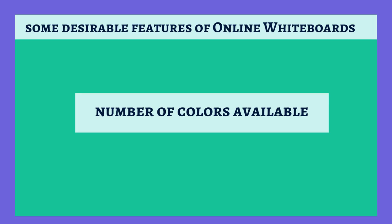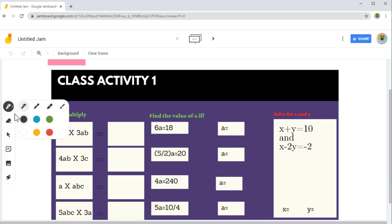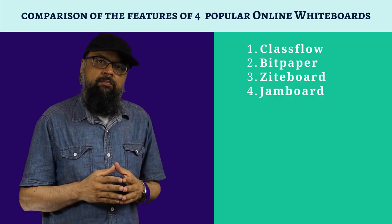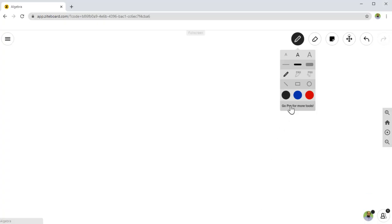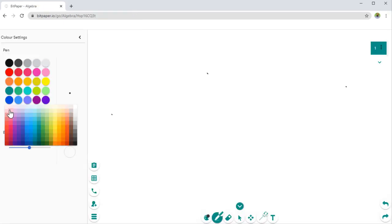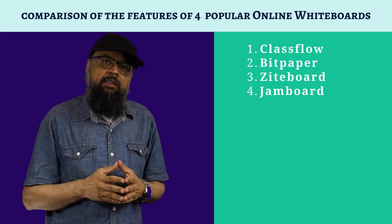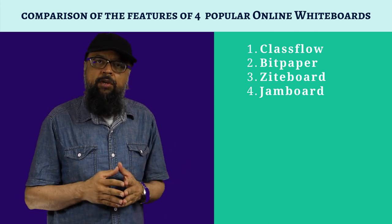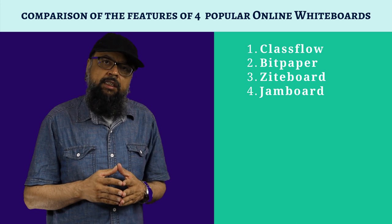There are differences in the number of colors available. In Jamboard, you have only six colors. In the free version of Ziteboard, you have only about three colors. In the free ClassFlow whiteboard, you have many colors available, and in Bitpaper you have almost infinite colors. Normally you only need two or three colors, but for some users colors may be an important factor to consider.